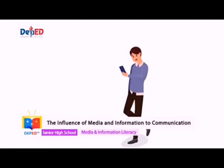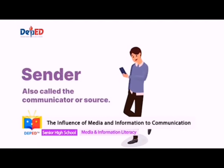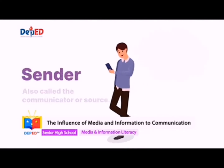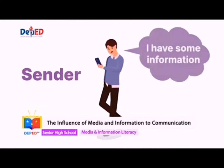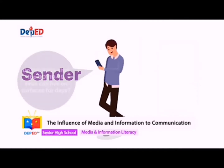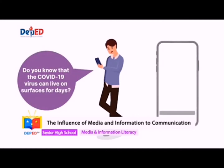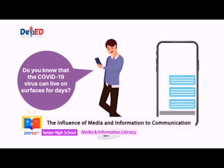The communication process begins with the sender, who is also called the communicator or source. The sender has some kind of information — a command, request, question, or idea — that he or she wants to present to others. For that message to be received, the sender must first encode the message in a form that can be understood, and then transmit it.